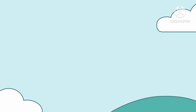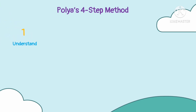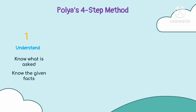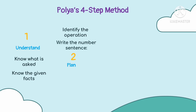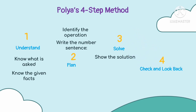We can solve the problem using Polya's 4-step method, which we already used in the first quarter. The first step is to understand the problem by knowing what is asked and knowing the given facts. The second step is to plan, where we identify the operation to use and write the number sentence. The third step is to solve and show the step-by-step solution. The last step is to check and look back, stating your answer completely with a label.